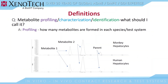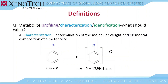A few definitions to get started. Often the question comes up: is it metabolite profiling, metabolite characterization, or metabolite identification? Generally, profiling refers to how many metabolites are formed in each species or test system. The example chromatogram here shows monkey hepatocytes and human hepatocytes with a parent drug and two metabolites. The profiles between the two are pretty similar — that's a profile.